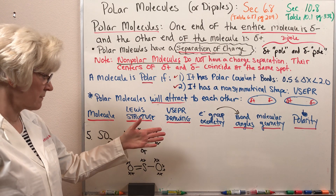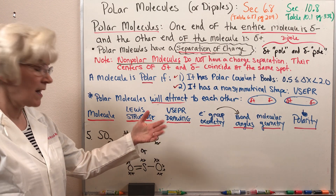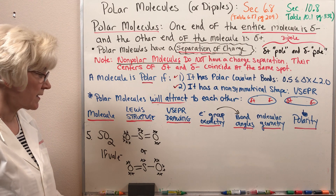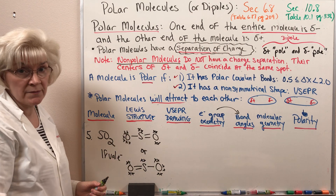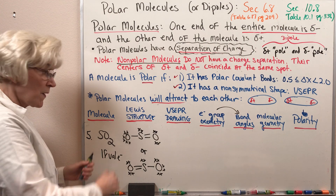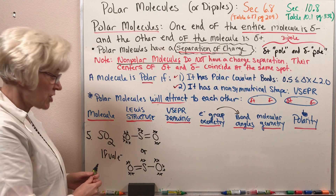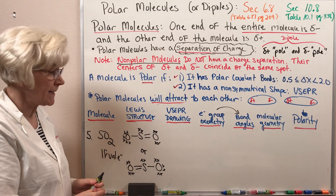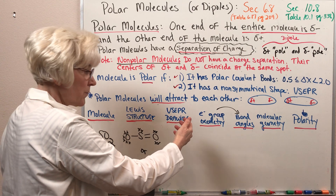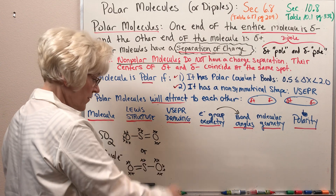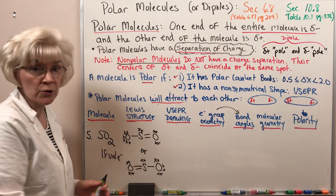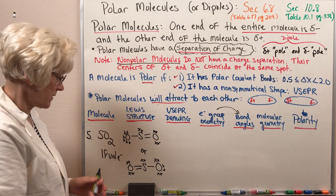You simply take one, lift it up, flip it over, and you generate the other. So either structure can be used to evaluate what the overall shape of sulfur dioxide is, and then a discussion of polarity — whether or not sulfur dioxide is a polar or nonpolar molecule.